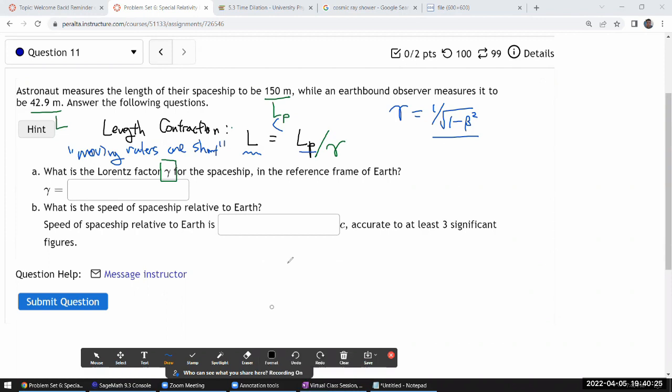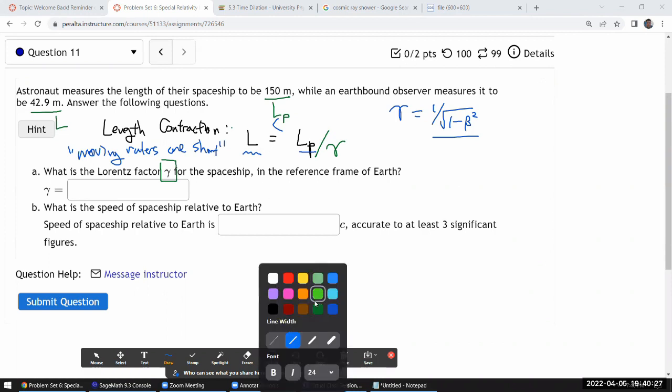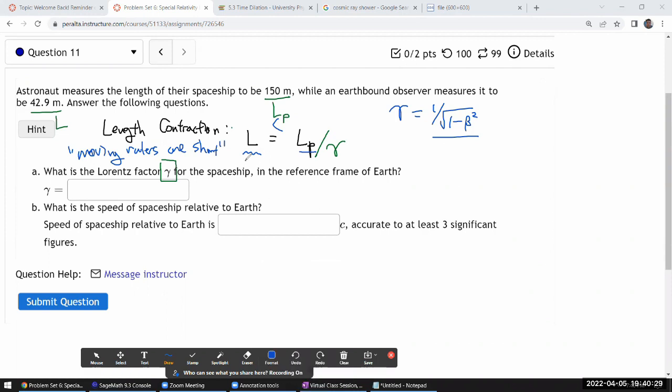Now once you have this, it's one short step to the kind of expression that you need, the formula that you need to answer this, which is solving this for gamma. So multiply both sides by gamma, divide by L, then you get gamma on the left-hand side, is equal to the proper length divided by the contracted length.